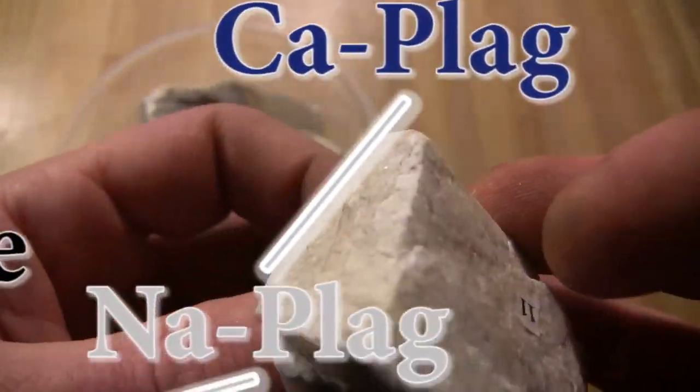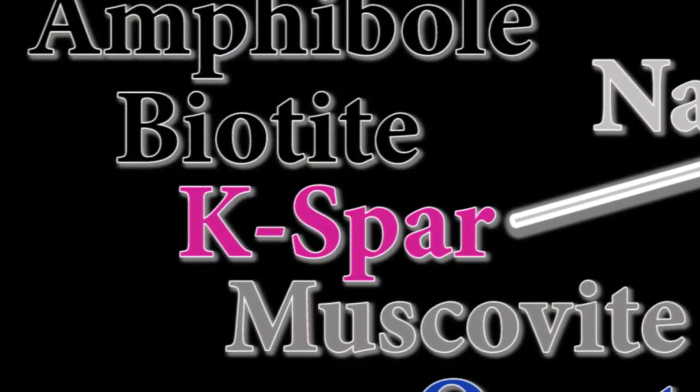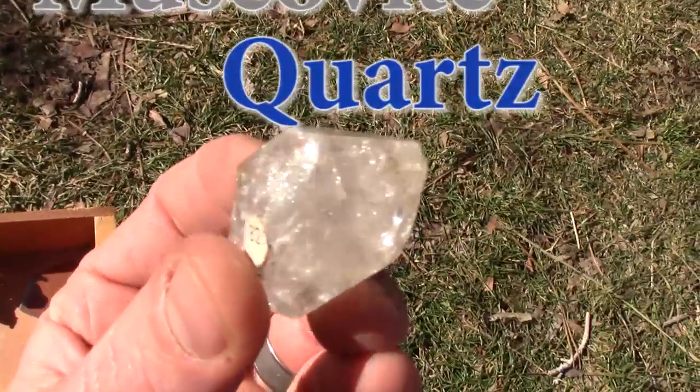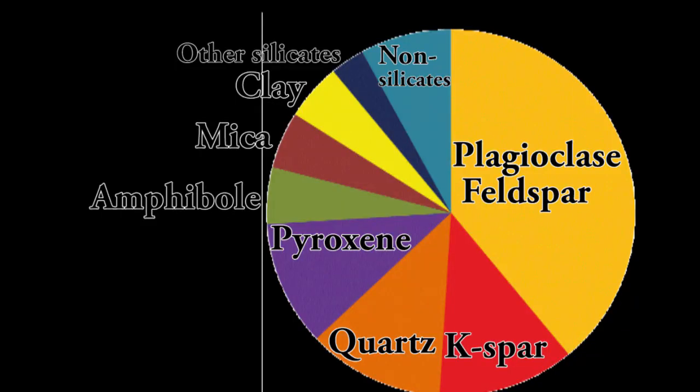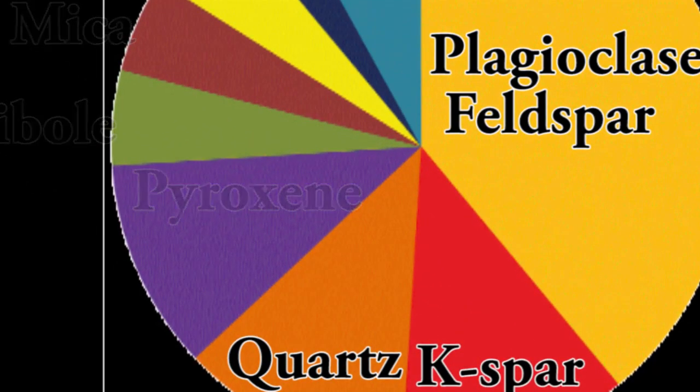But at the bottom of the Bowen's reaction series is potassium feldspar, or kspar, and quartz, which respectively are the next two most common minerals on the Earth's surface. Right there are most of the Earth's crust.